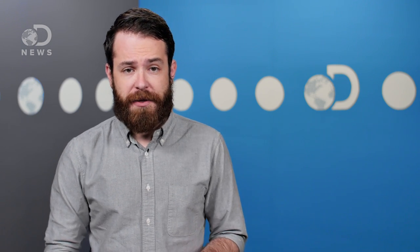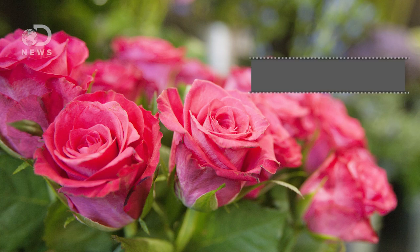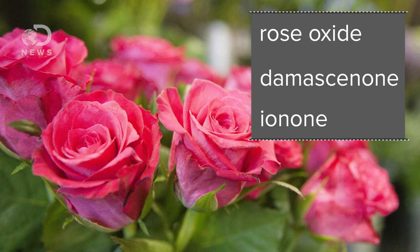And plants use VOCs to fulfill a lot of functions. Sweet-smelling VOCs are used to attract pollinators, which is why sunflowers give off a pleasant scent. Roses release volatile organic compounds like rose oxide, damascinone, and ionone, which we associate with the smell of roses.